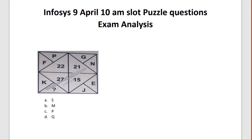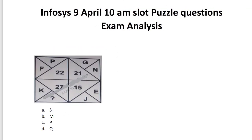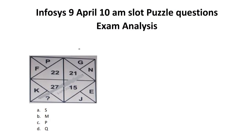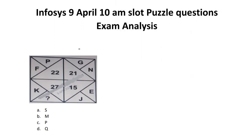Now coming to the questions. This is the Infosys 9th April 10 AM slot. The first question is the same pattern we discussed yesterday. Students who watched our video would know it well — we recorded that video at around 11 PM. Same pattern is being used. The alphabets may be different but the approach is the same: F is on 6, P is on 16, so 16 plus 6 equals 22. That is your answer.